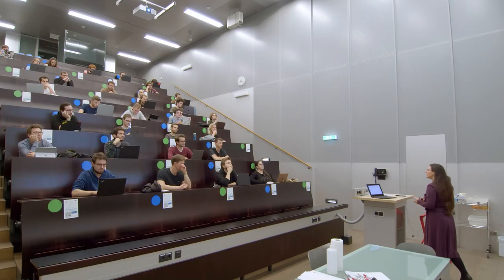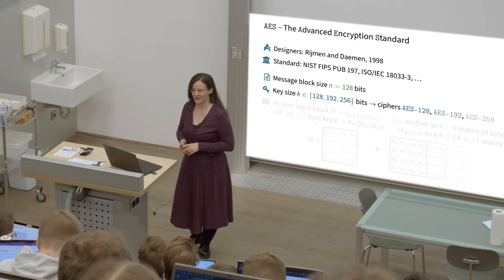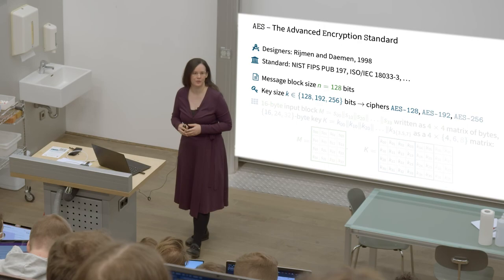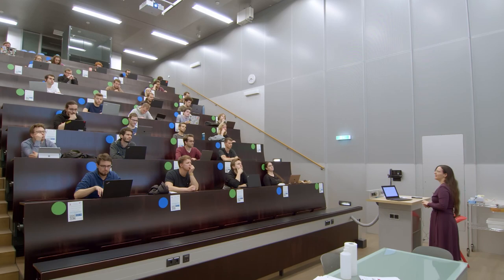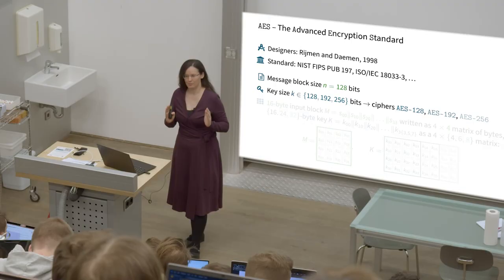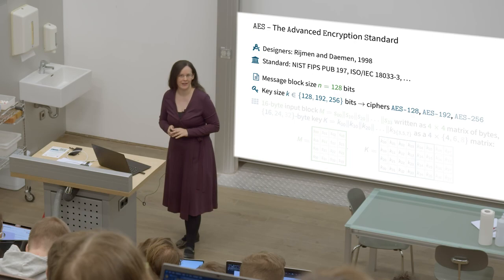So what does it do? It actually processes message blocks of only 128 bits, and can encrypt them with a secret key that has one of three bit lengths: 128, 192, or 256 bits. Most often it's AES-128, so we'll focus on that one. Blocks and keys have a particular bit size, so they are bit strings, but the AES actually represents them in a very specific way during its operations.